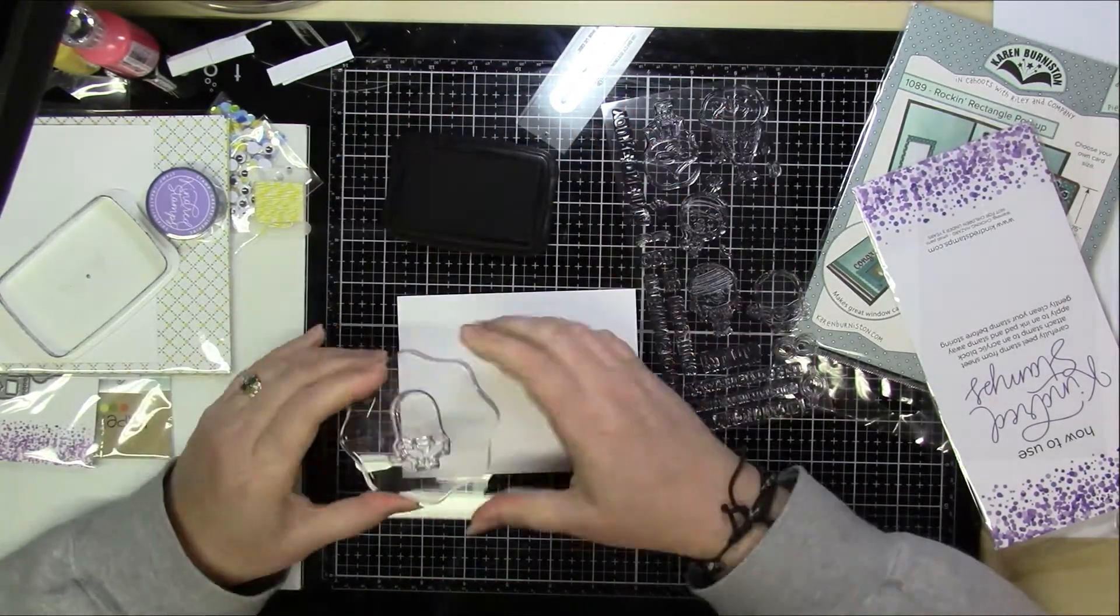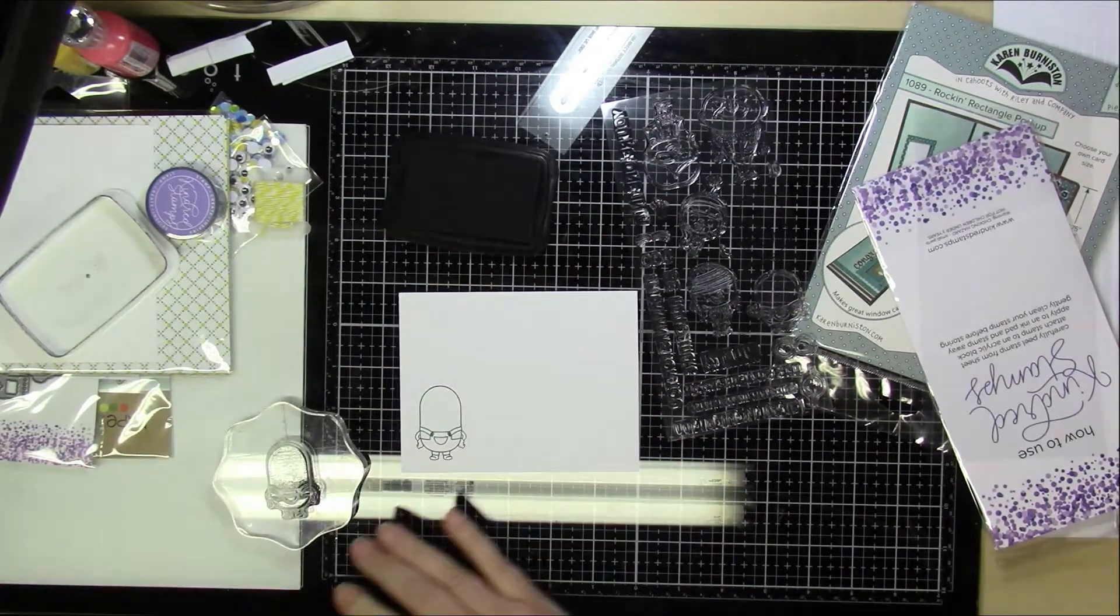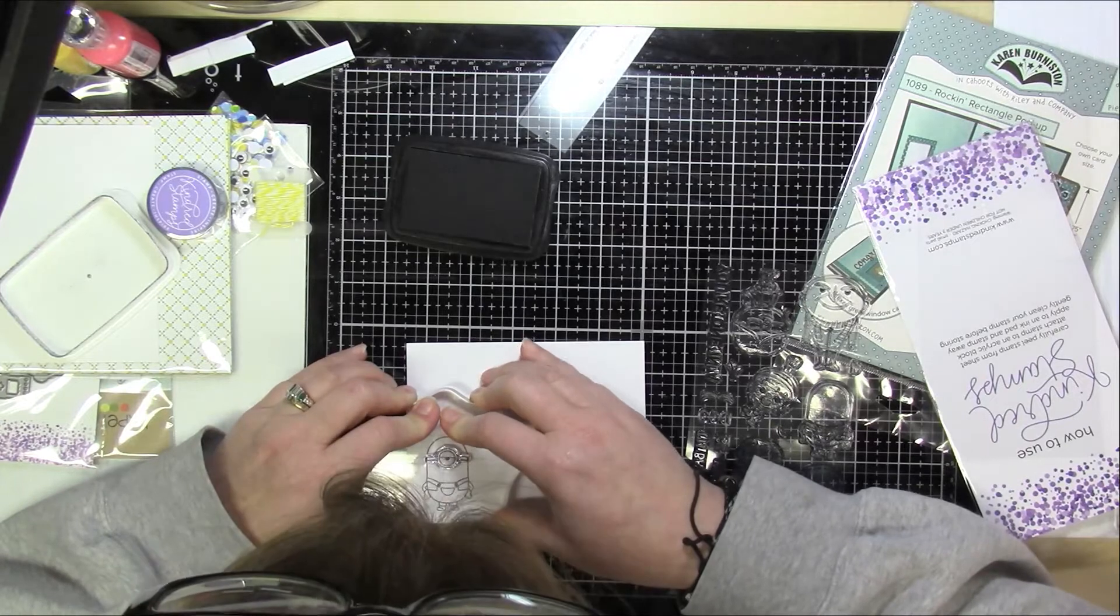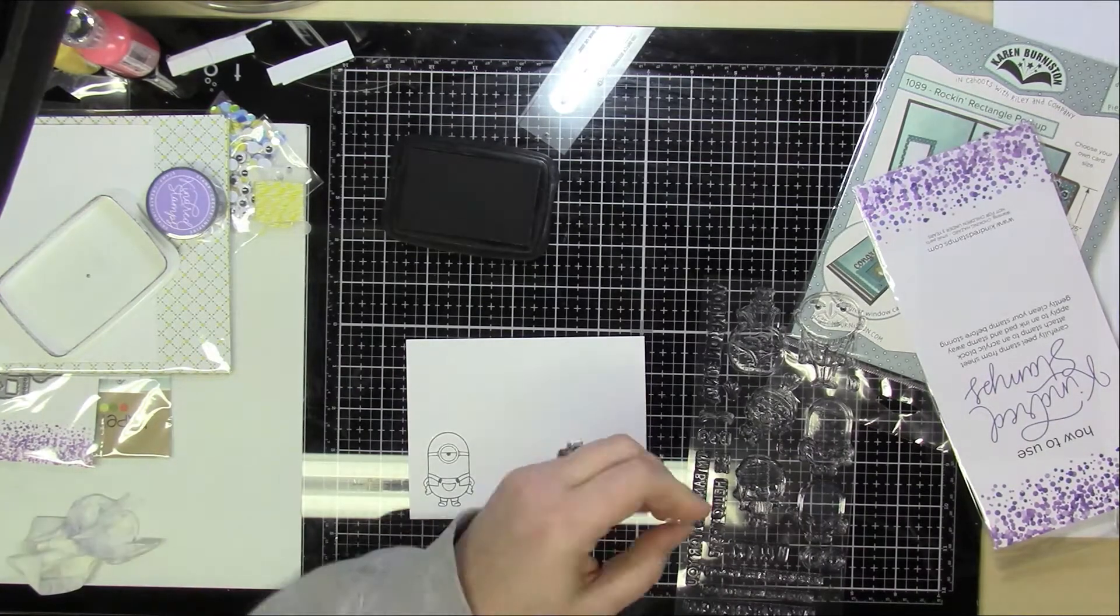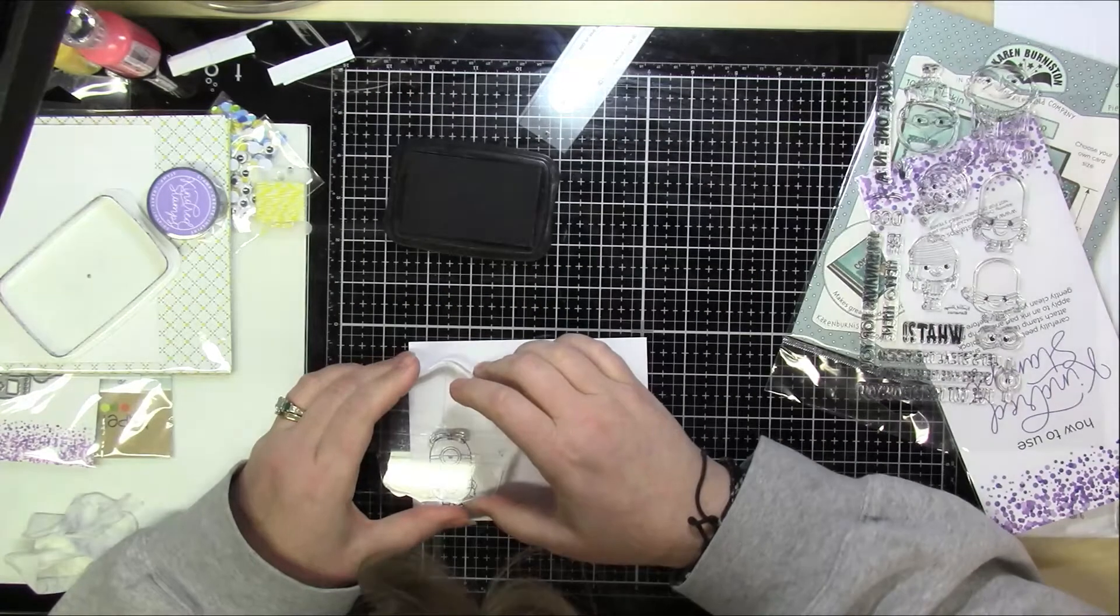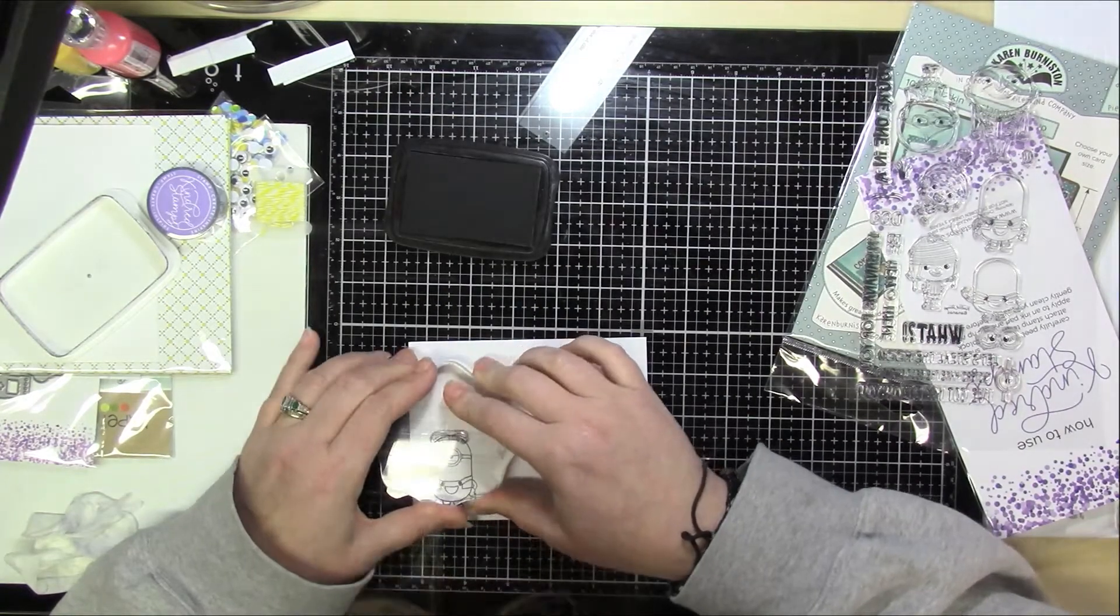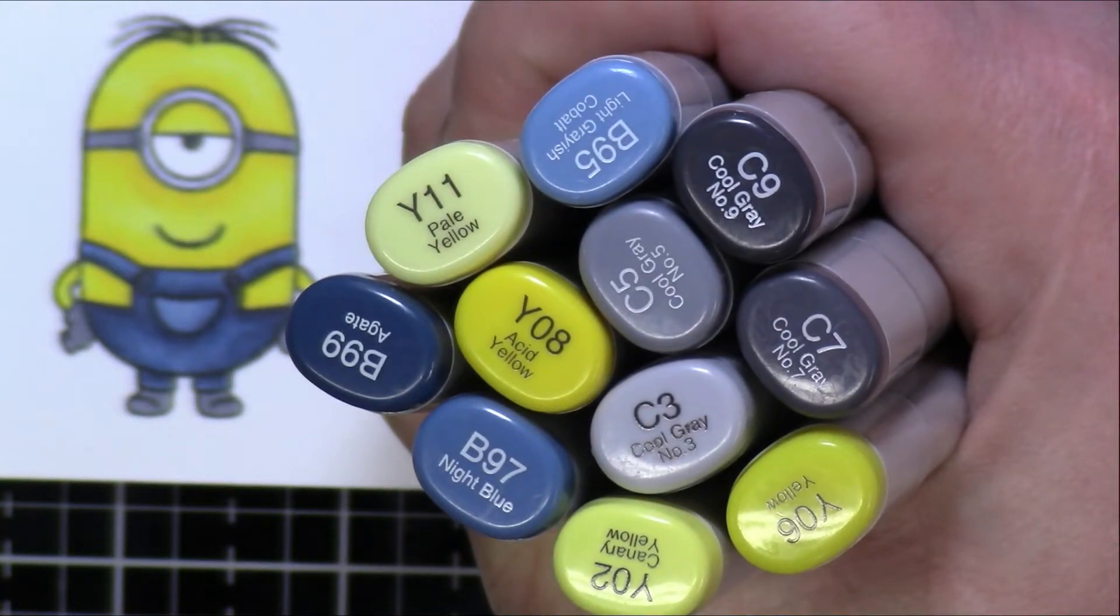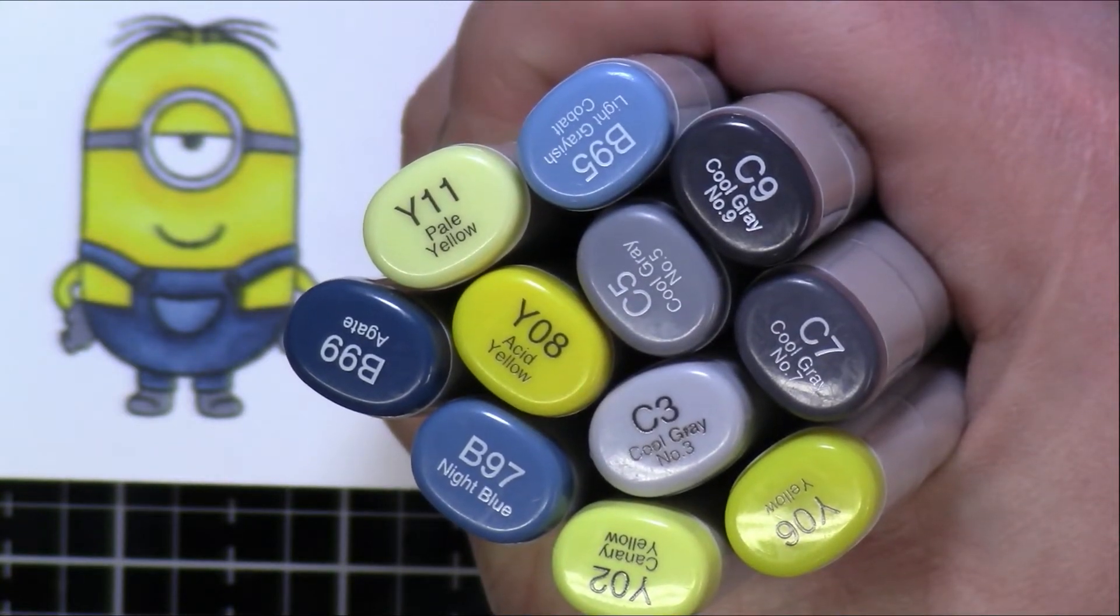Especially because my coloring isn't all that spectacular anyway. But I did stamp it with some Momento Tuxedo Black ink and this is kind of a fun stamp set because it gives you different eyes and hair and mouths to stamp to make the images look different. Now those are the colors that I used for the Copic markers.